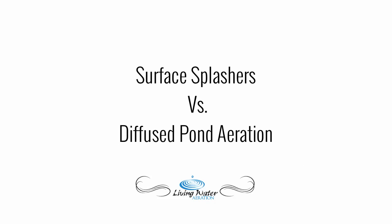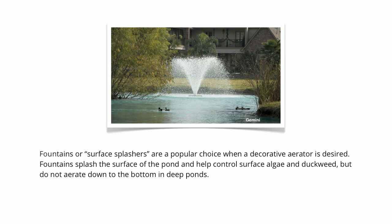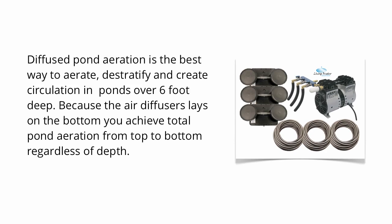Surface Splashers vs. Diffused Pond Aeration: surface splashers include, but are not limited to, fountains, water pumps, and propeller-type aerators. Fountains or surface splashers are a popular choice when a decorative aerator is desired. Fountains splash the surface of the pond and help control surface algae and duckweed, but do not aerate down to the bottom in deep ponds. Diffused pond aeration is the best way to aerate, destratify, and create circulation in ponds over 6 feet deep. Because the air diffusers lay on the bottom, you achieve total pond aeration from top to bottom regardless of depth.